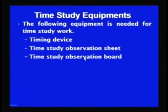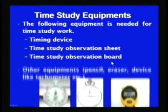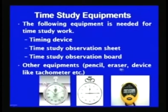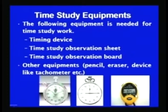Time study is carried out using several equipments, but three which are normally used are the timing device, time study observation sheet, and time study observation board. In addition to these, pencil, eraser, and devices like tachometer and scale are also used. Three timing devices are commonly used: the fly back timing type of stopwatch, the non-fly back (cumulative) timing type of stopwatch, and the digital watch, which can record time very accurately and store timing data in its memory.